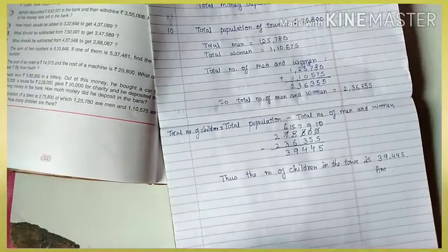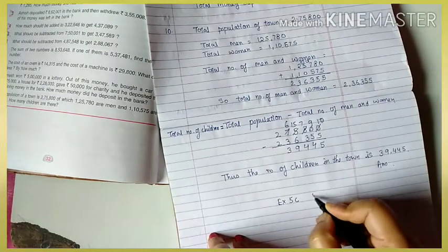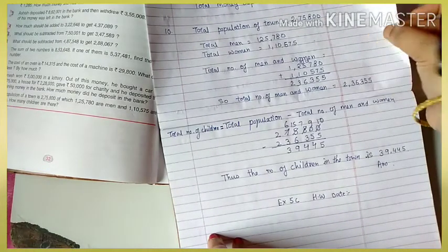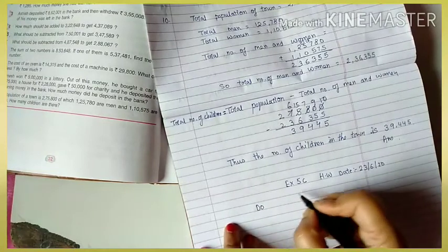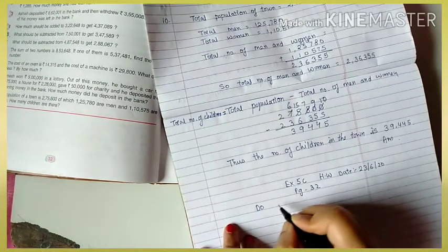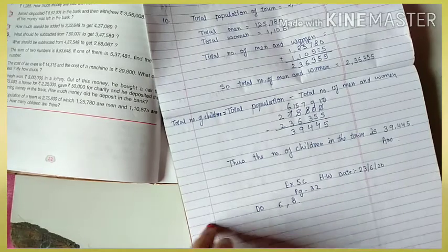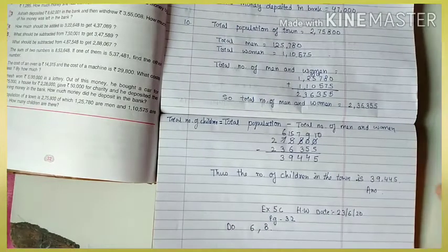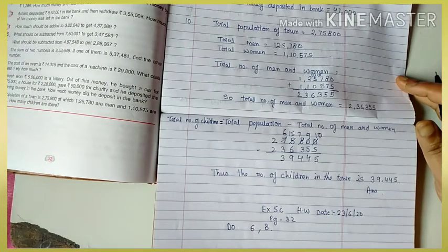Write it fast. I'm giving you homework: Exercise 5c homework — today's date is 23rd. For the 22nd I had given homework; today do page 32, question number 6 and question number 8 — two questions you have to do by yourself. Take a screenshot and do it in your copy. Thank you very much, children.